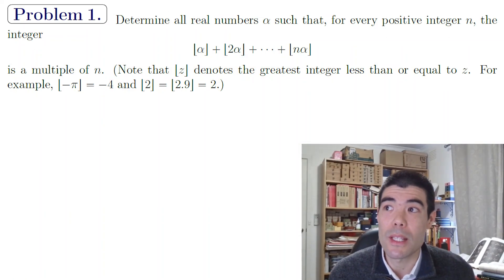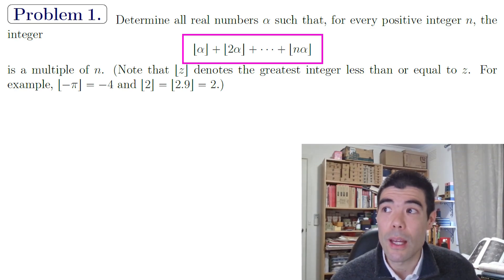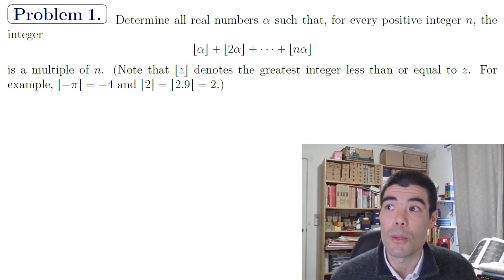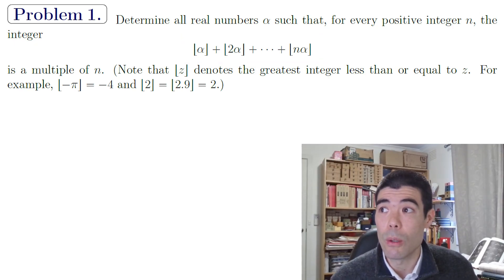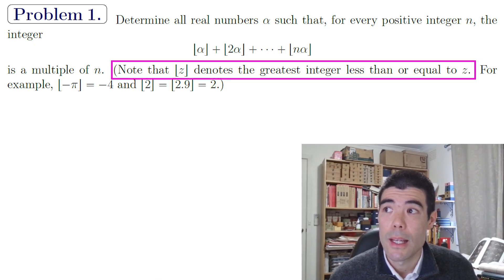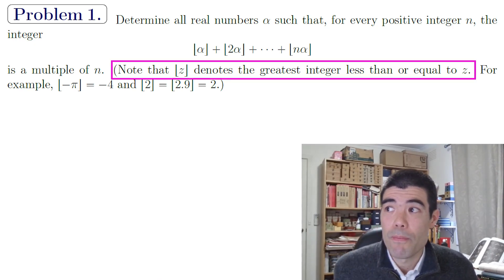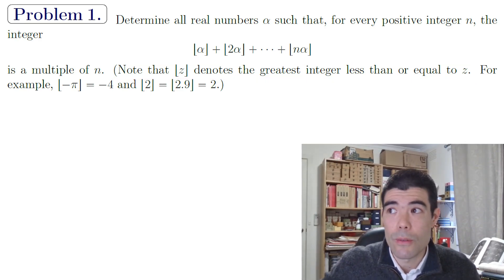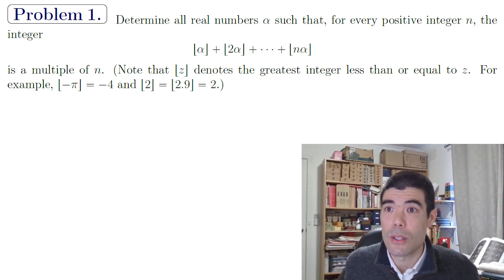The problem is to determine all real numbers alpha such that for every positive integer n, the sum floor(alpha) + floor(2*alpha) + floor(3*alpha) + ... + floor(n*alpha) is a multiple of n. The brackets denote the greatest integer less than or equal to — for example, floor(-π) = -4, floor(2) = 2, and floor(2.9) = 2.